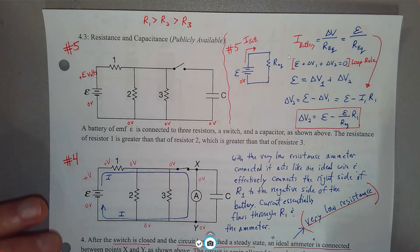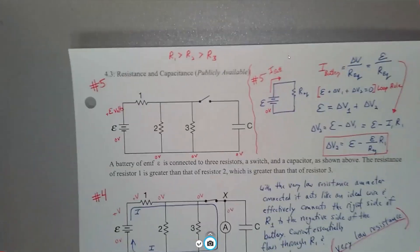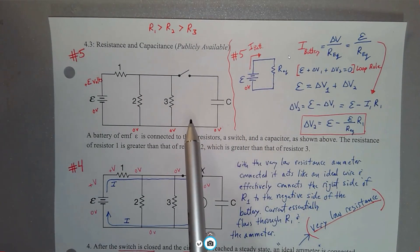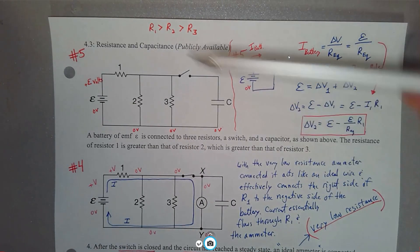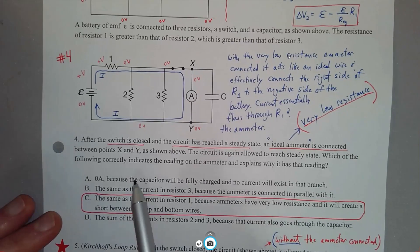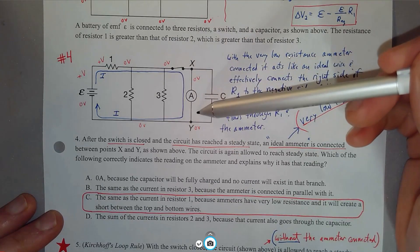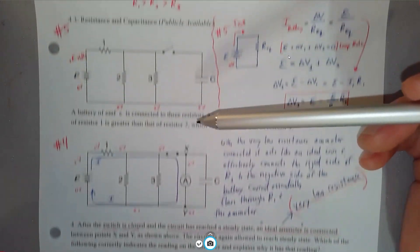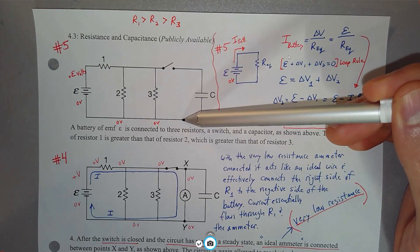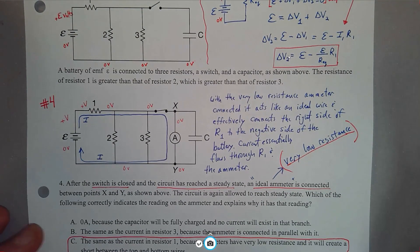Number 4 deals with a circuit that has both resistors and capacitors. A battery of EMF ε is connected to three resistors, a switch, and a capacitor. The resistance of R1 is greater than R2, which is greater than R3. After the switch is closed and the circuit has reached steady state, an ideal ammeter is connected between points X and Y — in parallel with the capacitor. An ideal ammeter has very, very low resistance, so it's basically like an ideal wire.